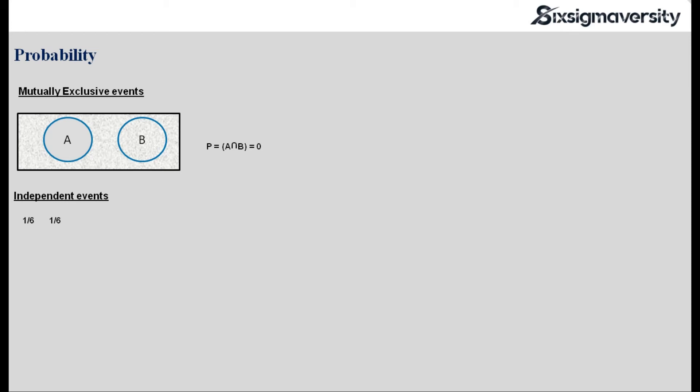Now let me explain what a dependent event is. I have a bag which has 3 green balls and 2 red balls, and I am conducting an experiment by picking one ball out of these 5. My probability of getting a green ball would be 3 out of 5. Now if I remove that first green ball which I took during my first experiment, I will be left with 2 green balls and 2 red balls. If I do another probability calculation, my probability of getting a green ball would be just 2 out of 4. This is called a dependent event.